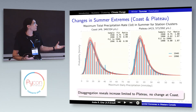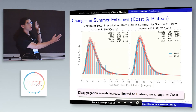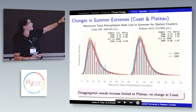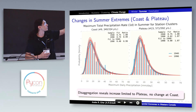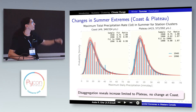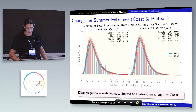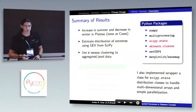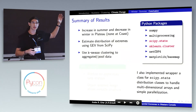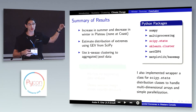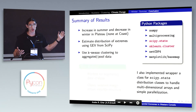We can do the same for summer using the two clusters again. Here we see that, as in winter, there is no change at the coast, but most of the change was really dominated by the plateau. So as a summary: an increase in summer at the plateau, a decrease in winter, and no change at the coast.